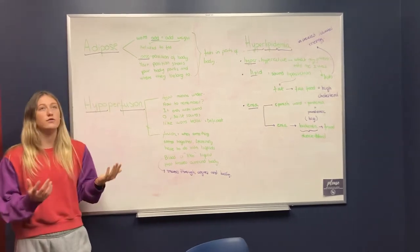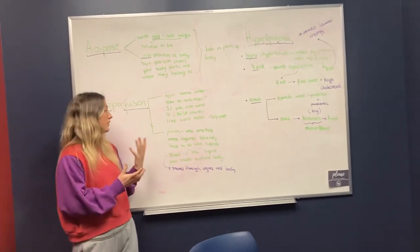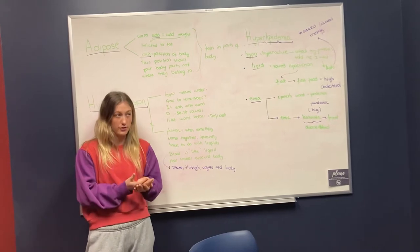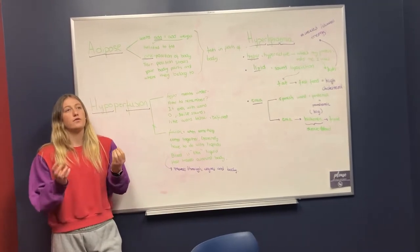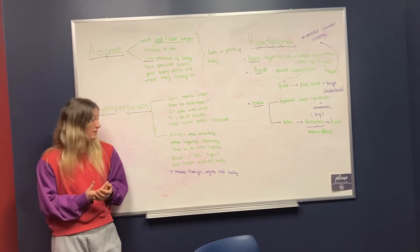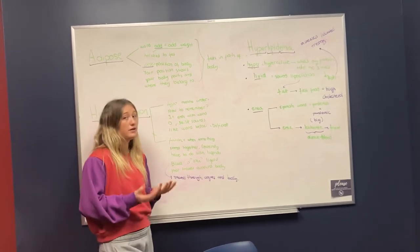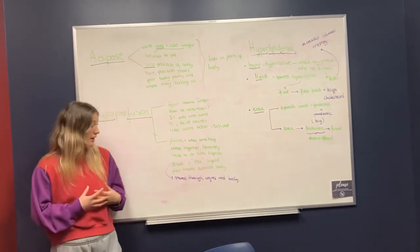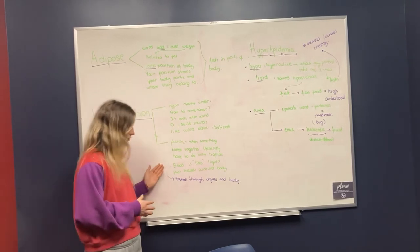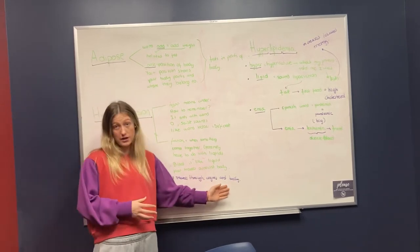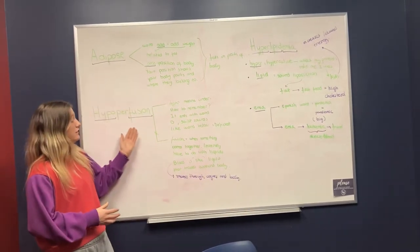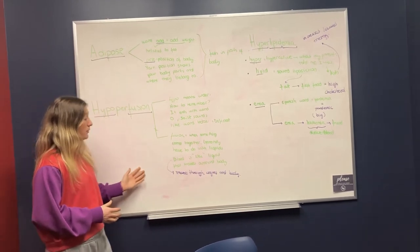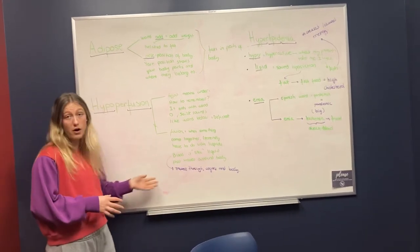Then fusion. When you think about fusion, we think about when something comes together. When we think of fusion, it's always fusion of liquids. And the most abundant liquid in our body is the blood, and blood travels through the organs and body. So hypoperfusion is the deficiency of blood fusion through the body and organs.